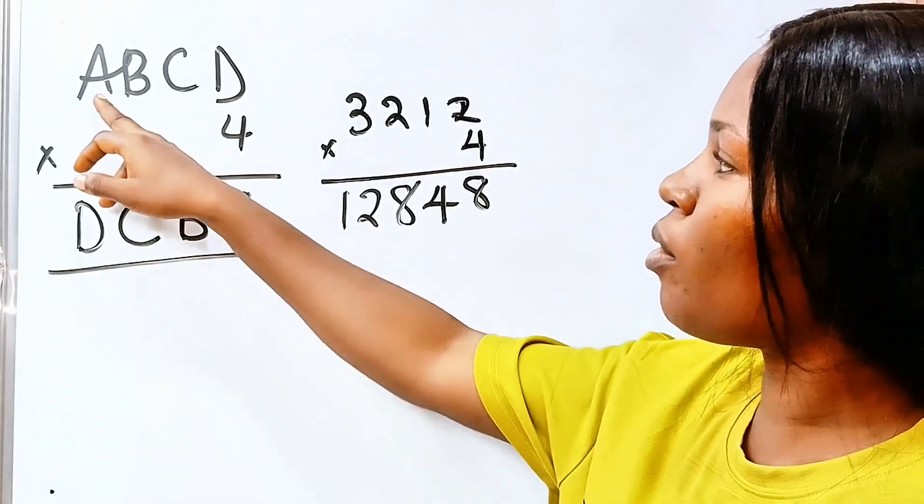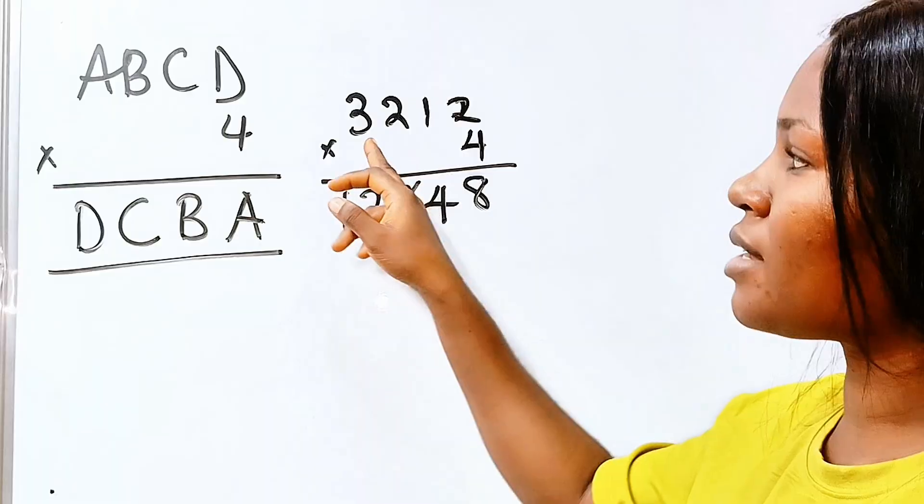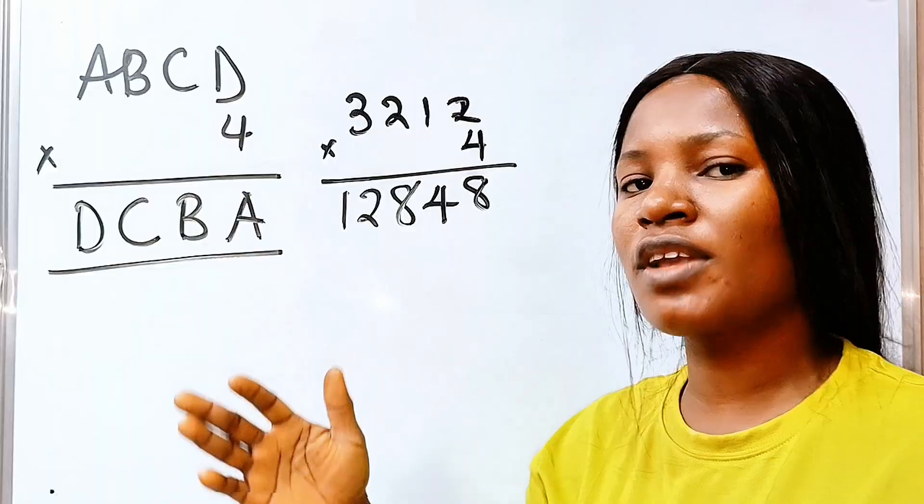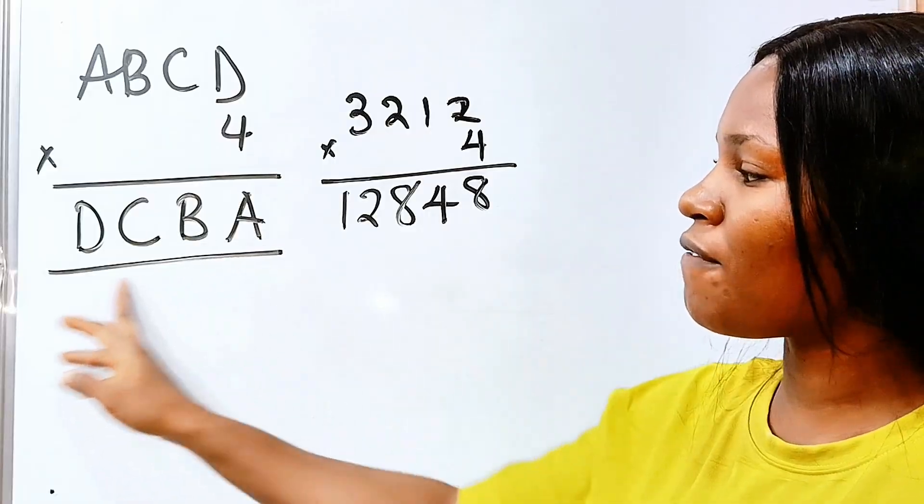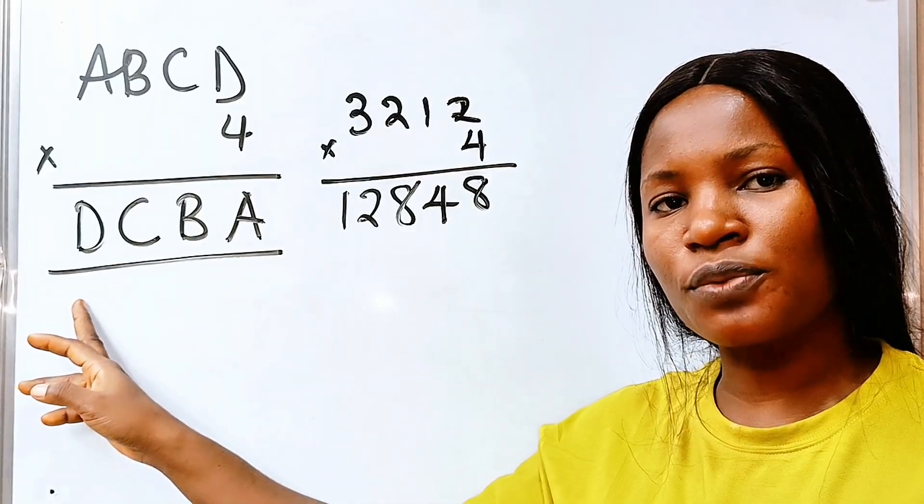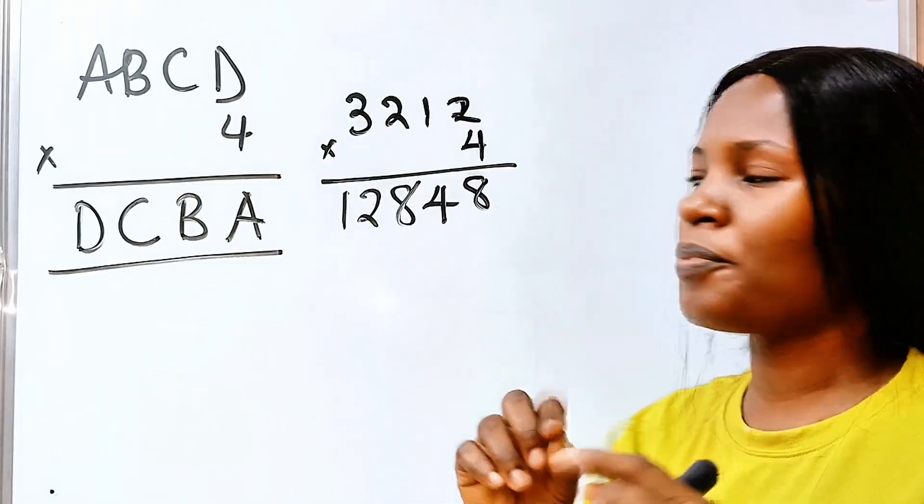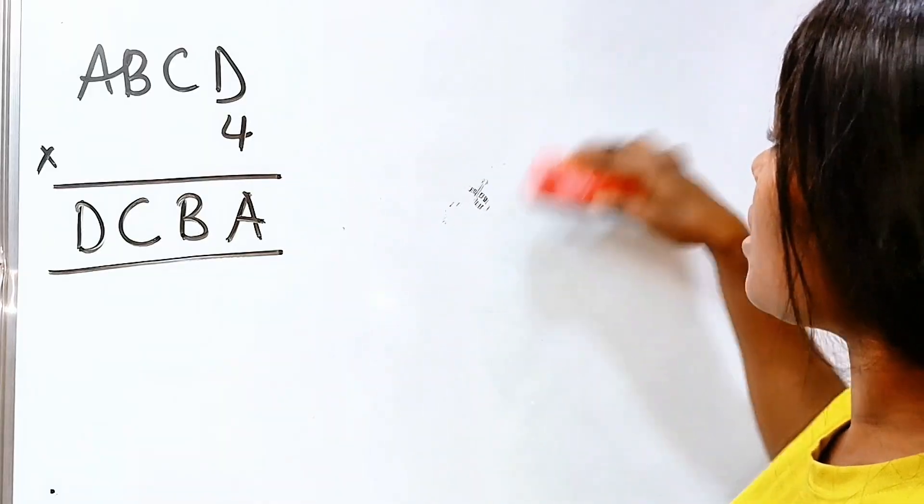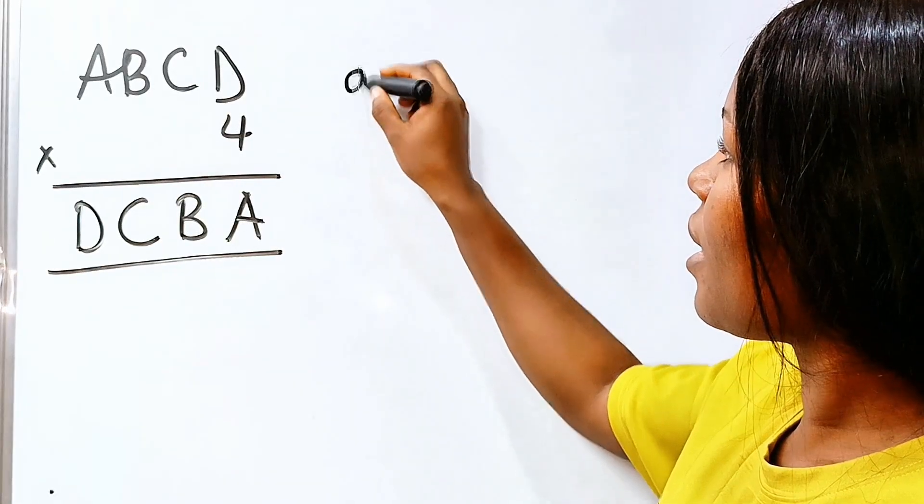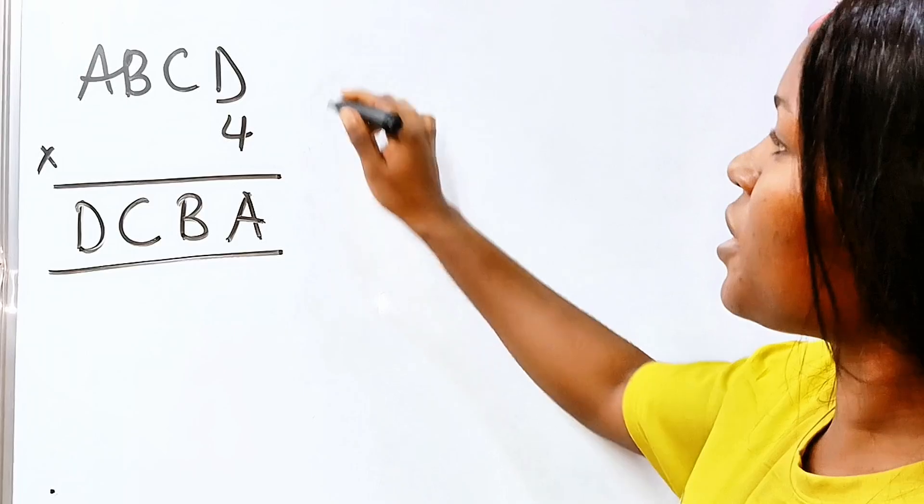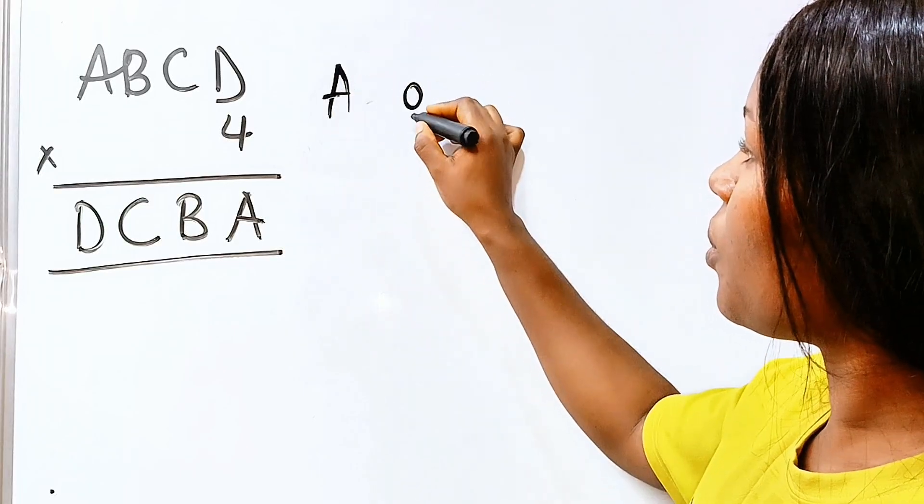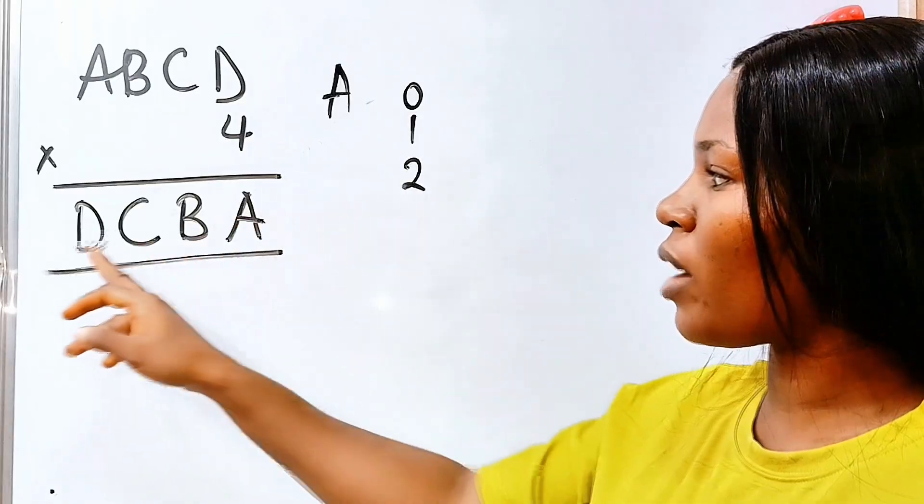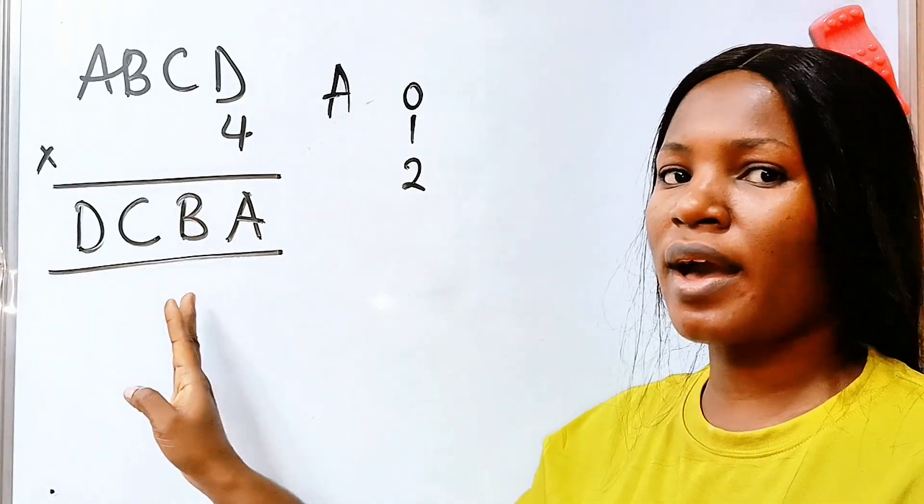So it simply means that our number A cannot start with 3. It cannot be 3. Because if it's from 3, 4, 5, 6, 7, 8 and above, we are going to have five digit numbers as our solution. So that gives us the first idea of what our A could be.